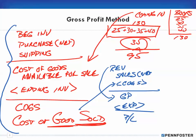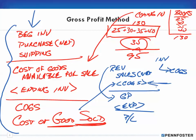All of this can be factored in. It's no longer simply: I bought something, put it in inventory, and when I sell it I move it to cost of goods sold with one journal entry. No — if you're not using specific ID you have to go through this whole method. It's not just one line item; you have to know all of this in order to calculate cost of goods sold, which then gives us our gross profit.